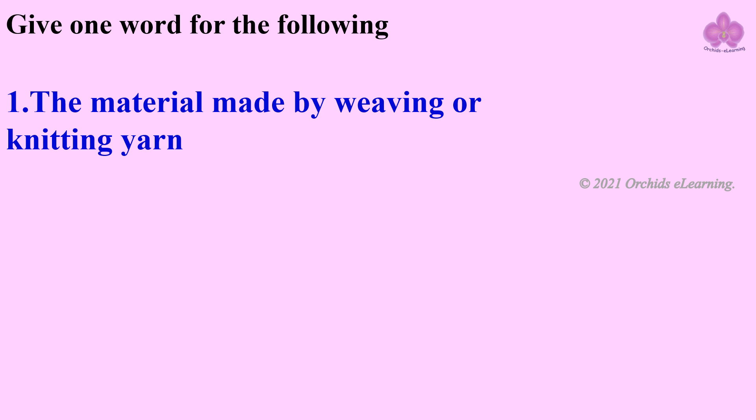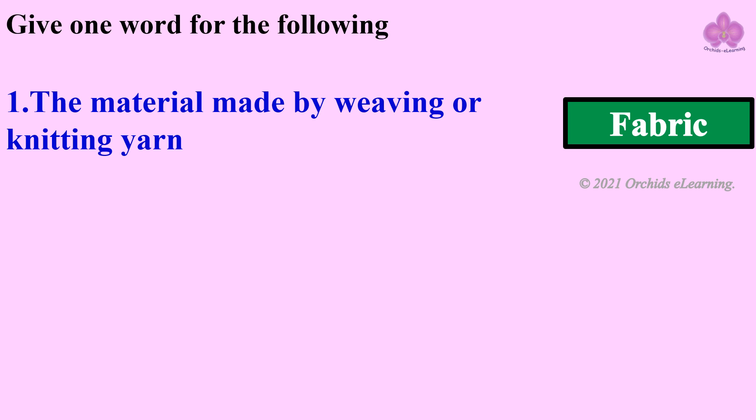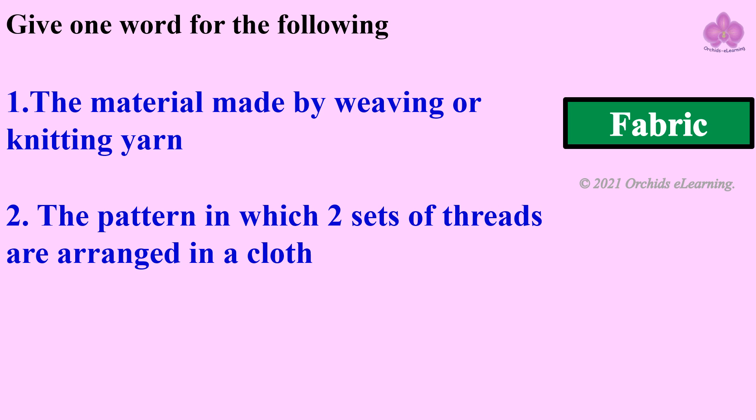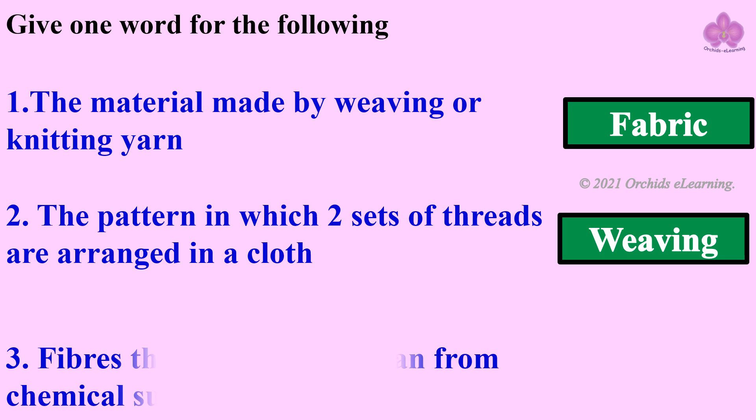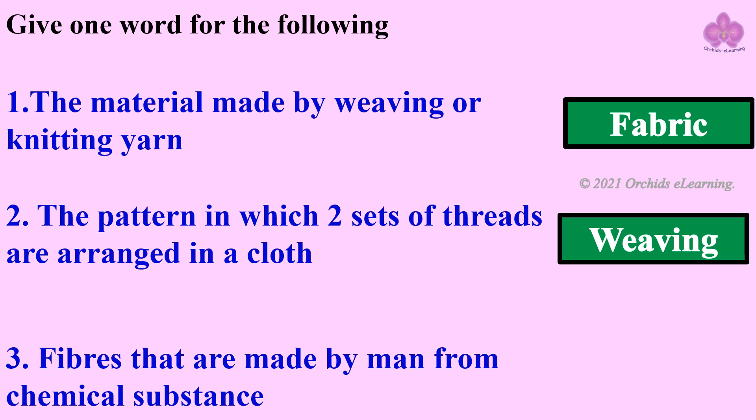Give one word for the following. The material made by weaving or knitting yarn: fabric. The pattern in which two sets of threads are arranged in a cloth: weaving. Fibers that are made by man from chemical substances: nylon.